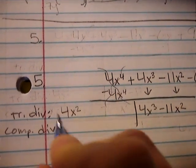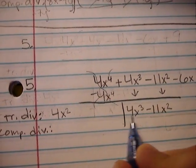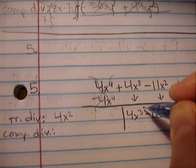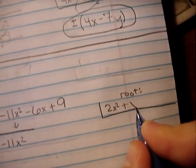And then you take that trial divisor and divide your first remainder by it. So 4x cubed divided by 4x squared. The 4s will cancel. The x's will cancel, leaving just 1x at the top. So that is what we put into here.